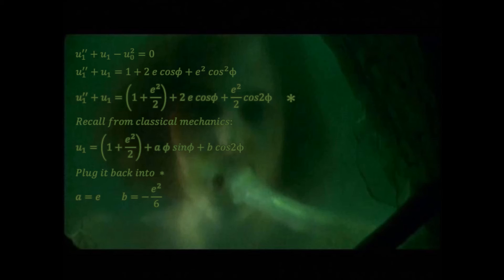We can use the smallness of alpha again to cast this expression into a form that is easier to interpret. For the orbit of Mercury, alpha is indeed very small, only about 10 to the minus 7.